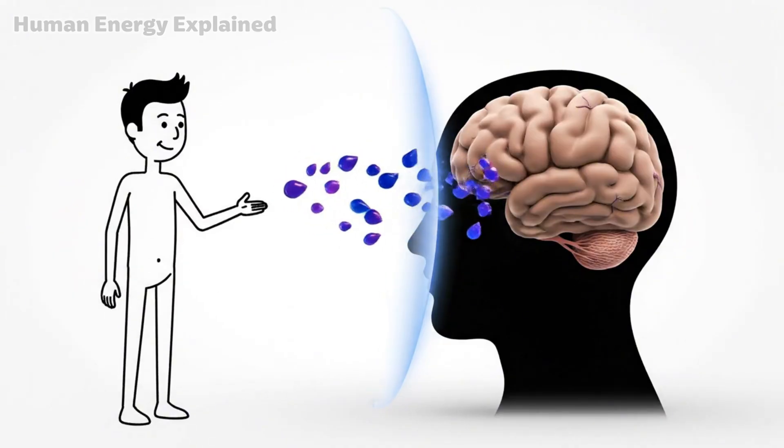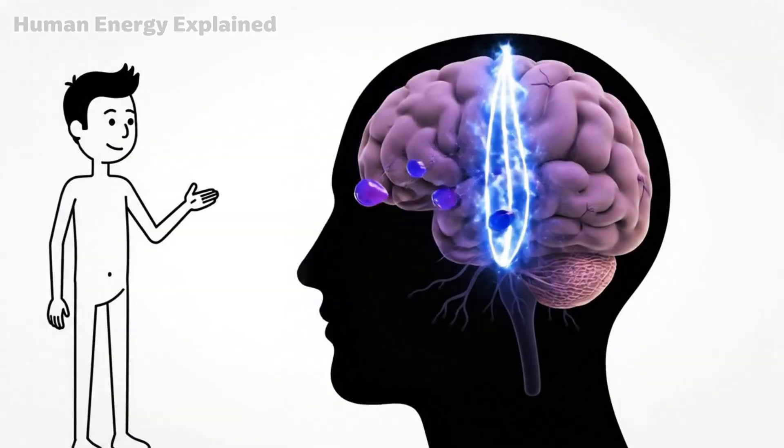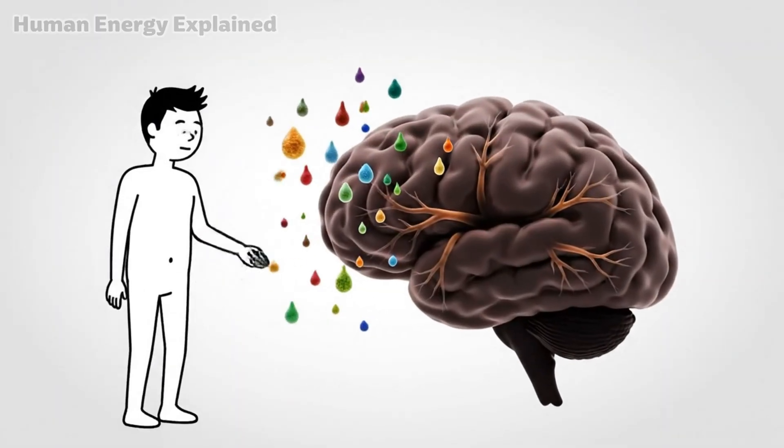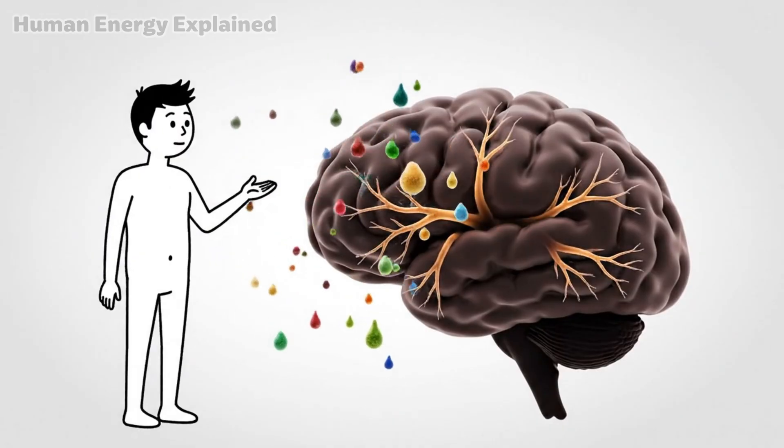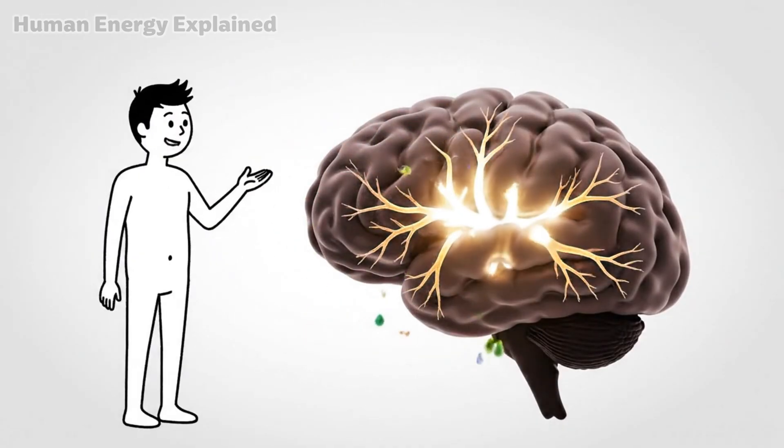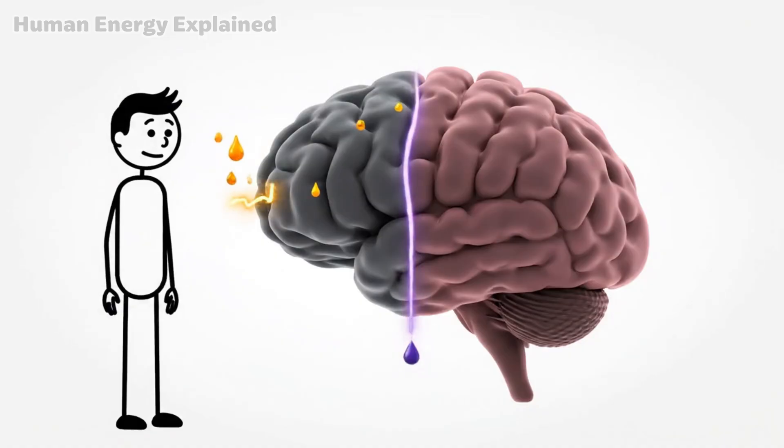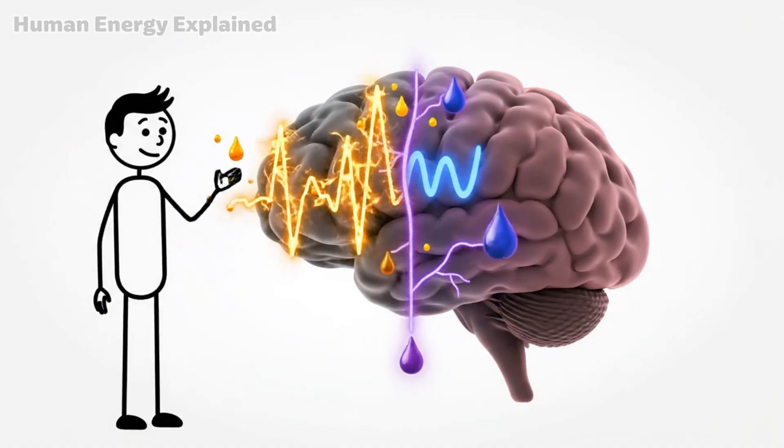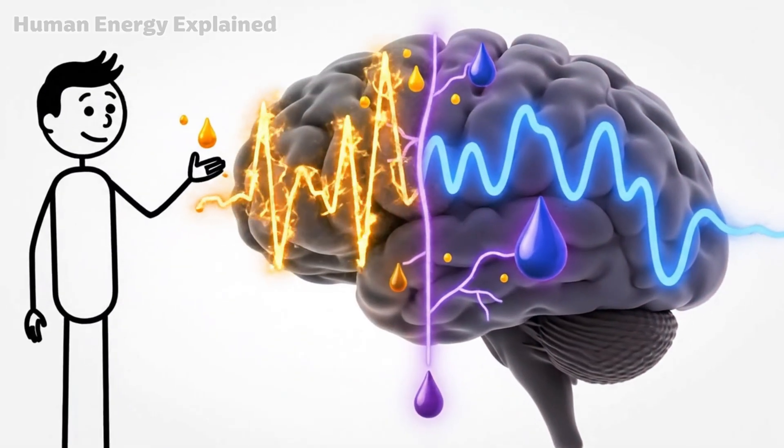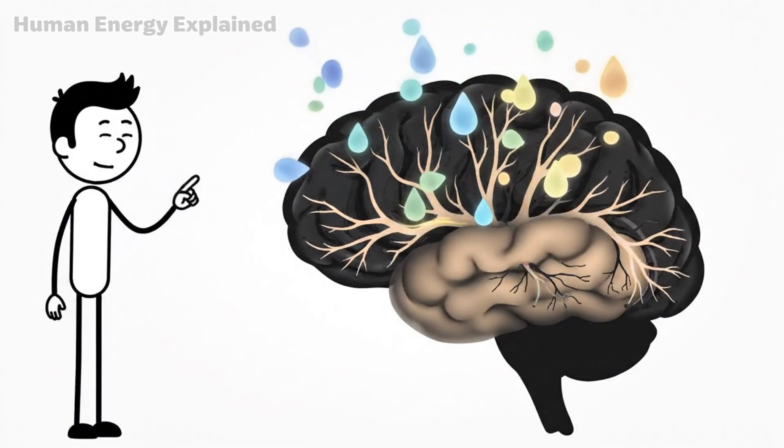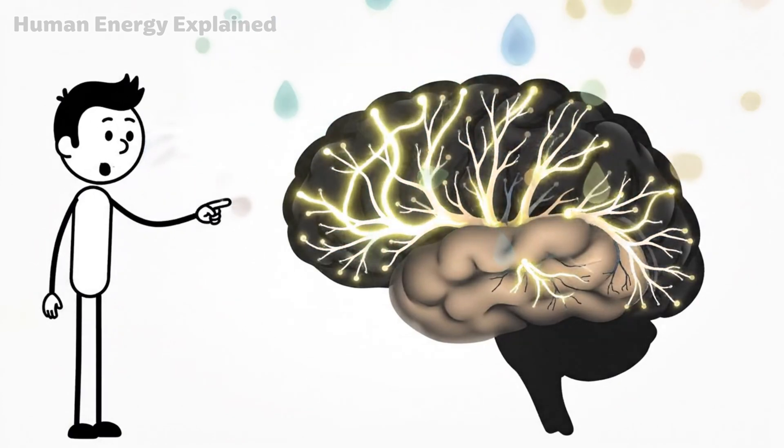There's a protein called BDNF, brain-derived neurotrophic factor. Think of it as fertilizer for your brain. BDNF supports the growth of new neural connections, enhances learning and memory, and protects existing neurons from damage. Fasting significantly increases BDNF production. Your brain isn't just surviving without frequent meals. It's building new infrastructure.